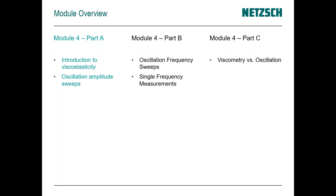Each part is labeled A, B, and C. We'll start off with the introduction of viscoelasticity where we'll do non-destructive testing and look at oscillation type sweeps and oscillation amplitudes. Then we'll move into part B where we'll look at oscillation frequency sweeps and single frequency measurements and their applications. Finally in part C we'll look at the difference between viscometry measurements versus oscillation measurements.